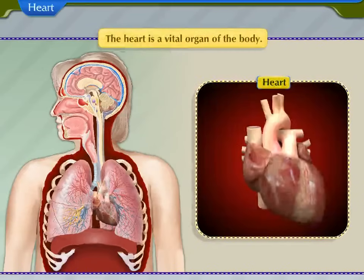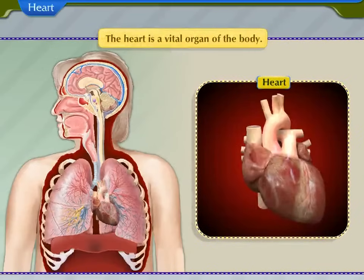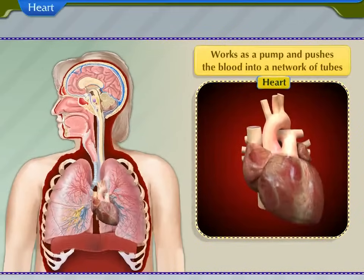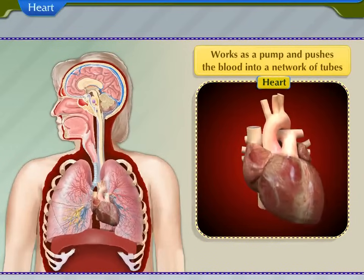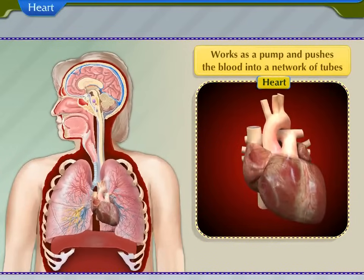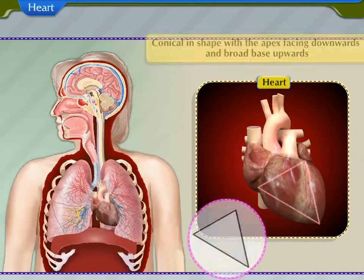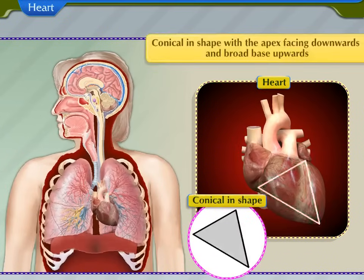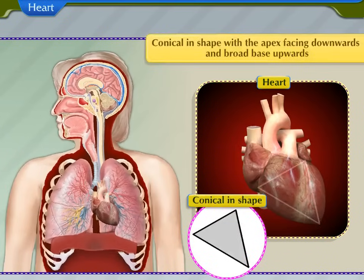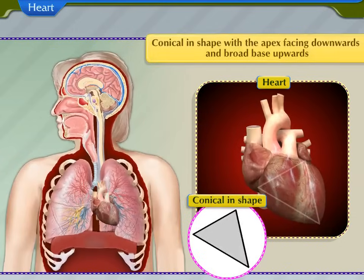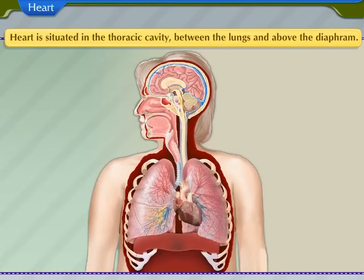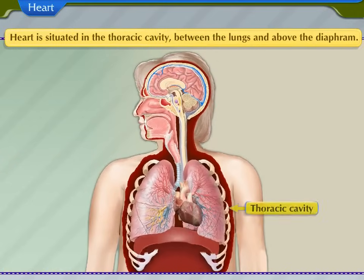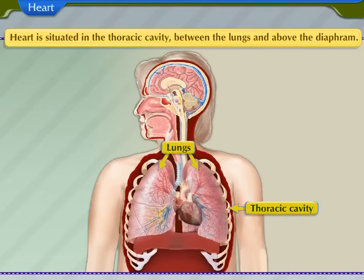The heart is a vital organ of the body. It works as a pump and pushes the blood into a network of tubes. The human heart is conical in shape with the apex facing downwards and broad base upwards. It is situated in the thoracic cavity between the lungs and above the diaphragm.